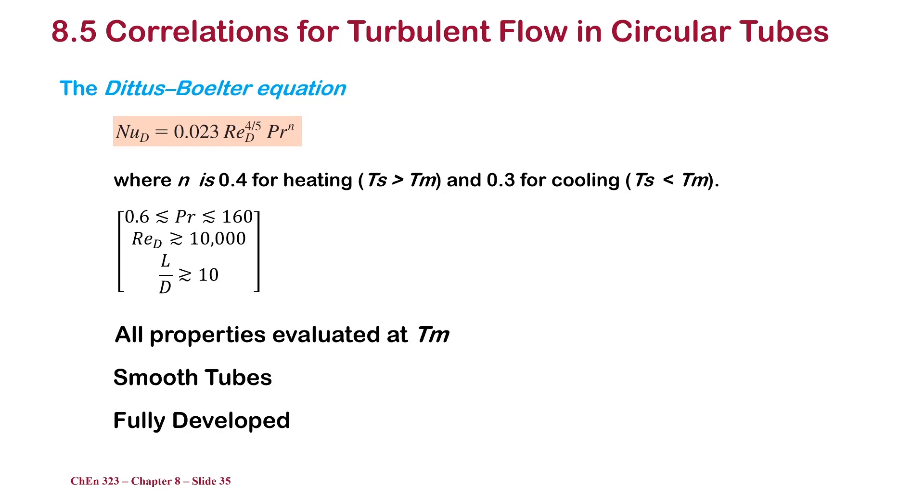The question is what do you do if you have turbulent flow? We have several equations. One of these equations is called the Dittus-Boelter equation. This equation is a function of Reynolds number and Prandtl number, where n is 0.4 for heating and 0.3 for cooling. The validity of the equation is given here.